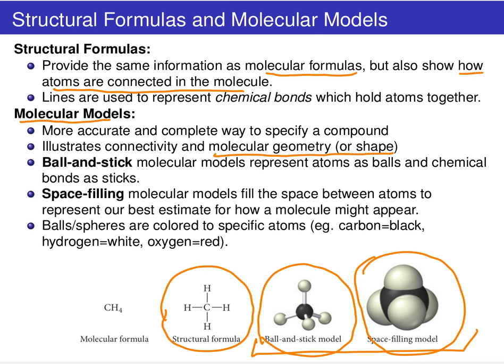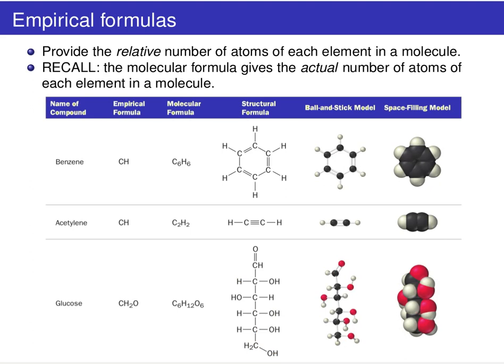So this is our molecular formula. Now, what we want to do is introduce another formula that you're perhaps not as familiar with, and this is the concept of empirical formula. So the empirical formula, unlike the molecular formula, just provides the relative number of atoms of each type in a molecule. So remember, the molecular formula gives you the actual number. Empirical formula gives you the relative number of each atom type.